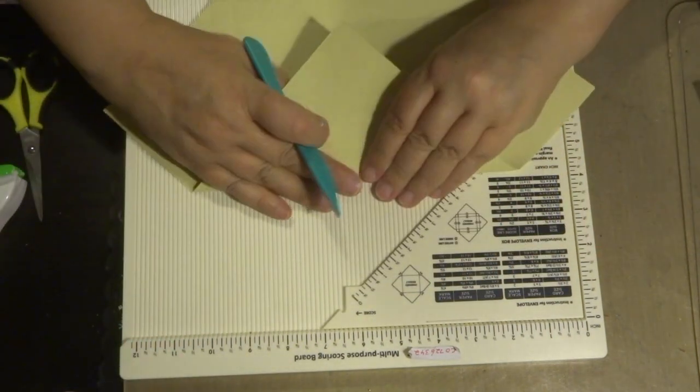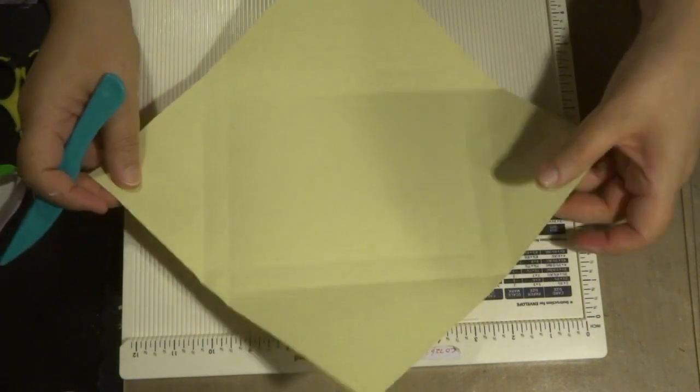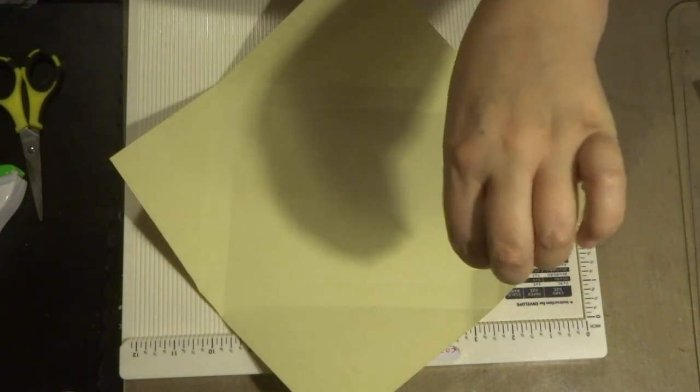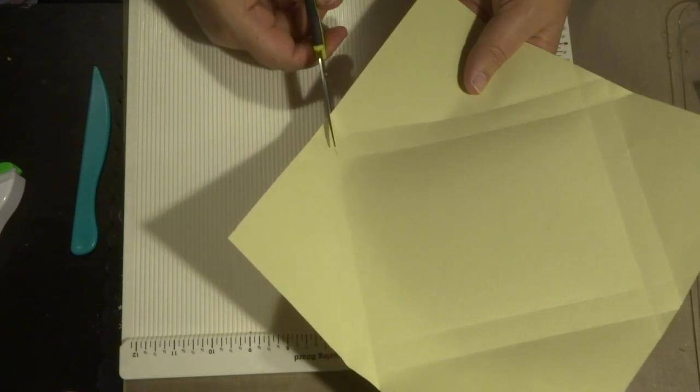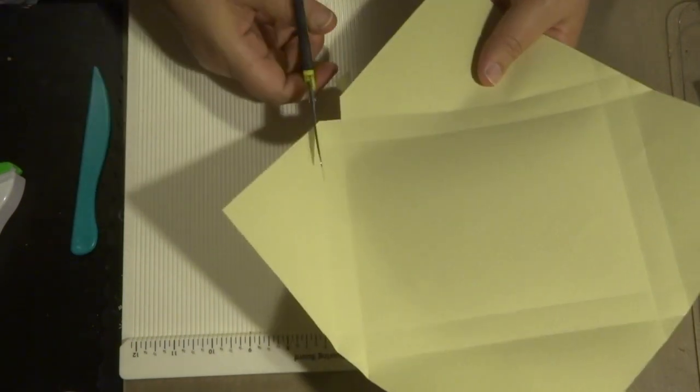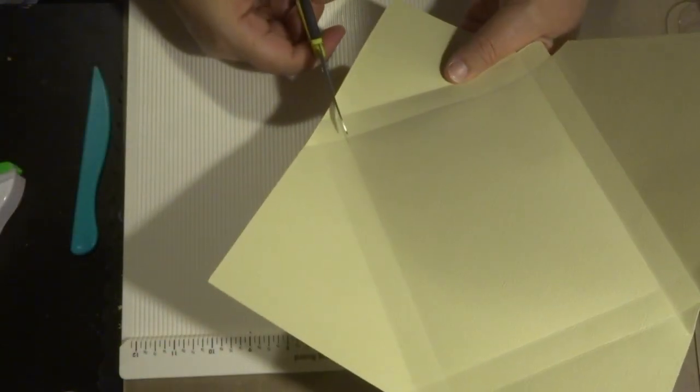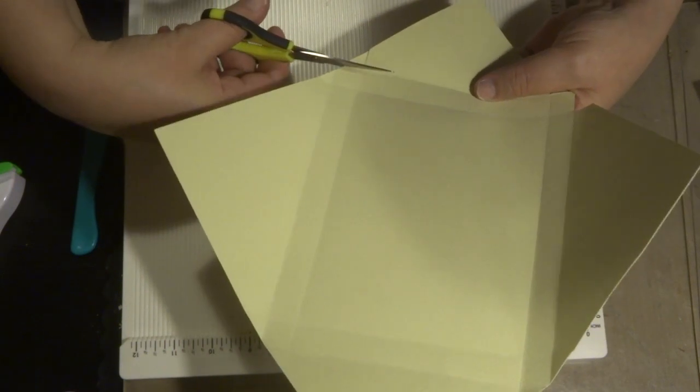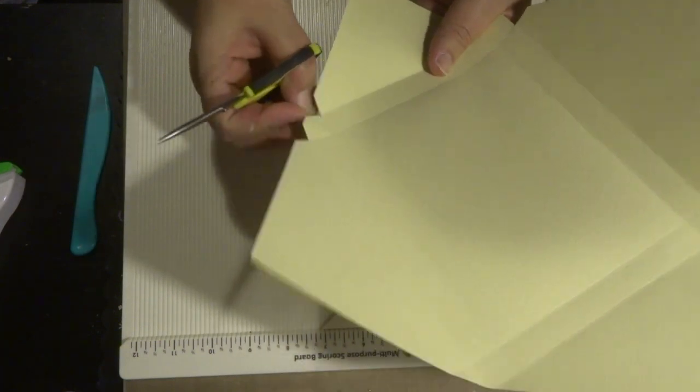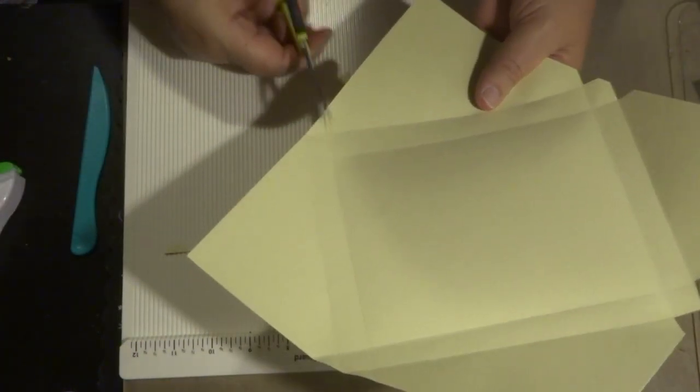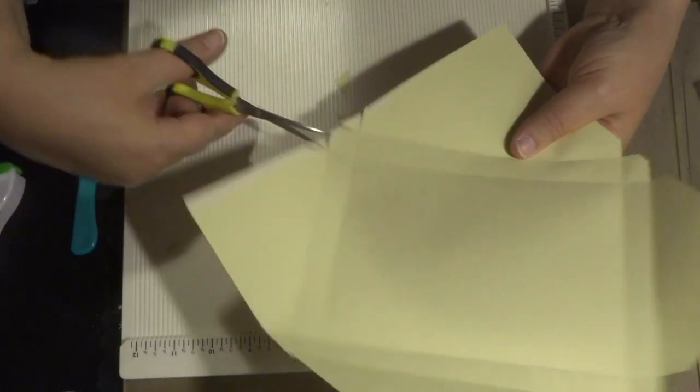So each side has been scored twice so you get sort of like a criss-cross effect happening in all the angles. So then you'll see there's like little triangles. You just cut out the little triangles. That helps you fold the edges with the flaps and they're all different because it's not a perfect square. We've done an actual rectangle. If you notice the cards aren't square, they are rectangle.